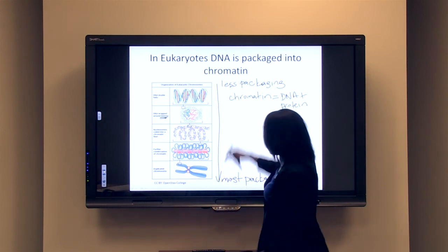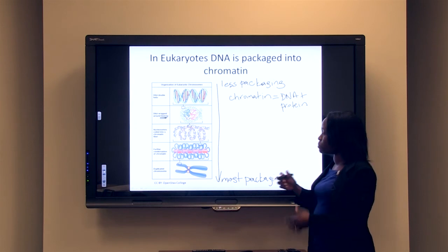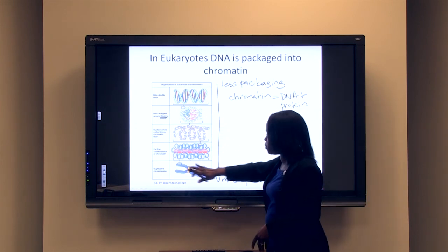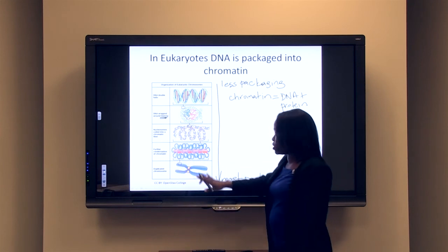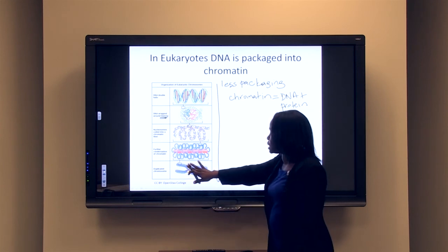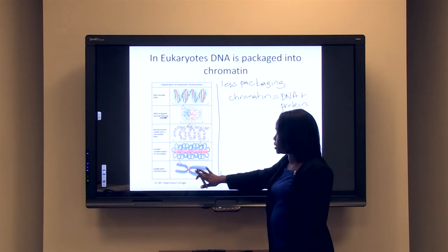Until you get to this point where the chromosome is in its most condensed form. This represents a chromosome in metaphase of the cell cycle, in metaphase after you have DNA replication occurring.